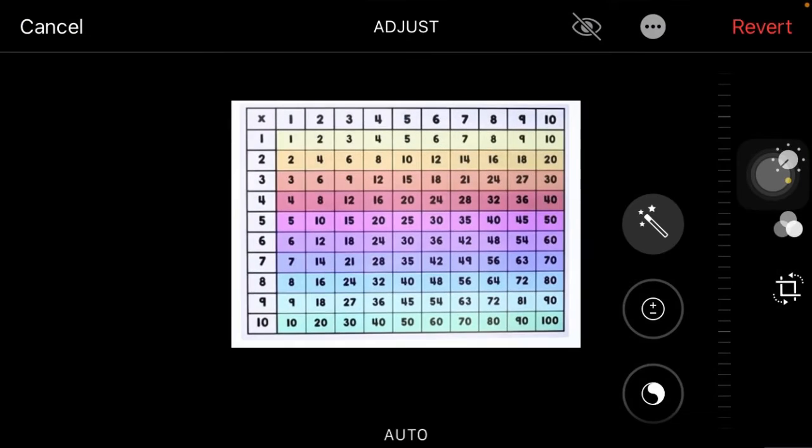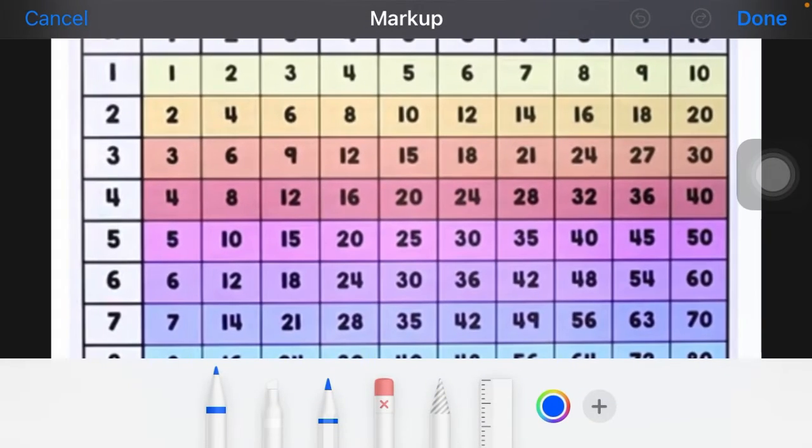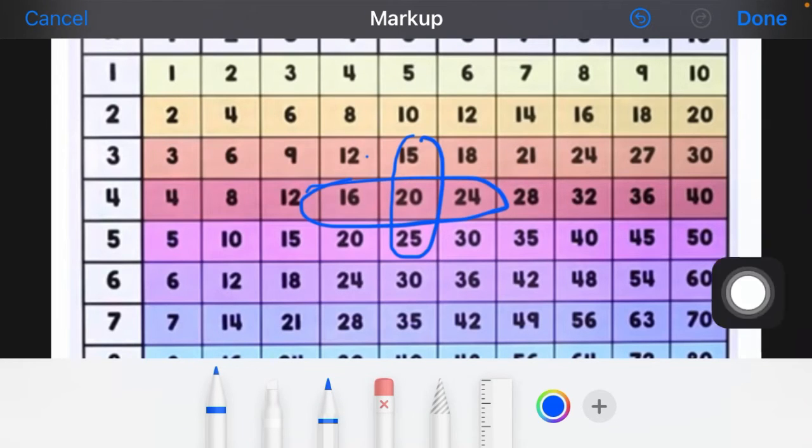I have to select numbers which are fifteen, twenty, twenty-five. Fifteen, twenty, twenty-five and sixteen, twenty, twenty-four. Fifteen, twenty and twenty-five. When I am adding...